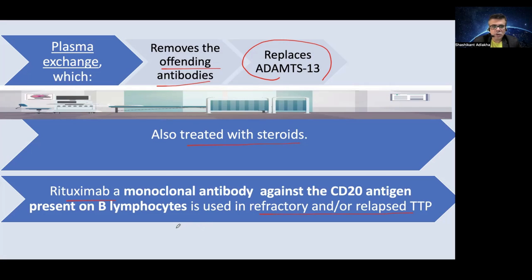To recap: TTP is a thrombotic disorder with microthrombi formation and platelet consumption. The pentad of symptoms includes fever, thrombocytopenia, neurological manifestations, renal failure, and microangiopathic hemolytic anemia. TTP is due to deficiency of ADAMTS13, which can be congenital or acquired. Treatment includes plasma exchange, steroids, and rituximab. Thank you for listening and please give your valuable feedback.